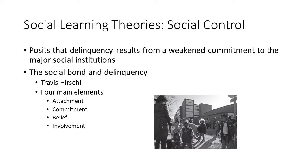Social control theory suggests that the strength and durability of an individual's bonds or commitments to conventional society inhibit delinquency. The need for belonging and attachment to others is fundamental, influencing many behavioral, emotional, and cognitive processes. Numerous studies highlight the association between attachments and positive youth outcomes. Early sociologists argued that various forms of delinquency, including criminal behavior, emerge when connections between individuals and larger society are weak.